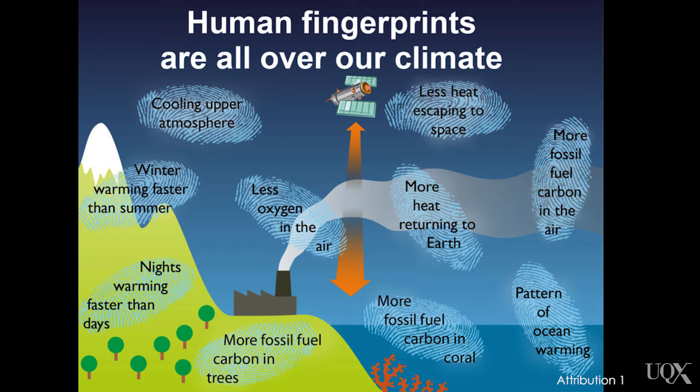Scientists predict that human-caused global warming should result in certain specific patterns of warming. Because these patterns are consistent with what we expect from the increased greenhouse effect, they're considered fingerprints of human influence on Earth's climate.